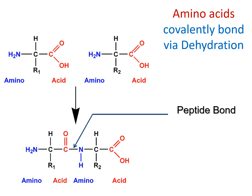Moving on from carbohydrates, now we have proteins. The monomer for proteins is an amino acid. It has an NH₂ amino functional group — nitrogen with two hydrogens — and a COOH carboxylic acid group. That's why we call it an amino acid. When you link two amino acids together and remove a water molecule through dehydration synthesis, you form a peptide bond. String those together and you get a protein.